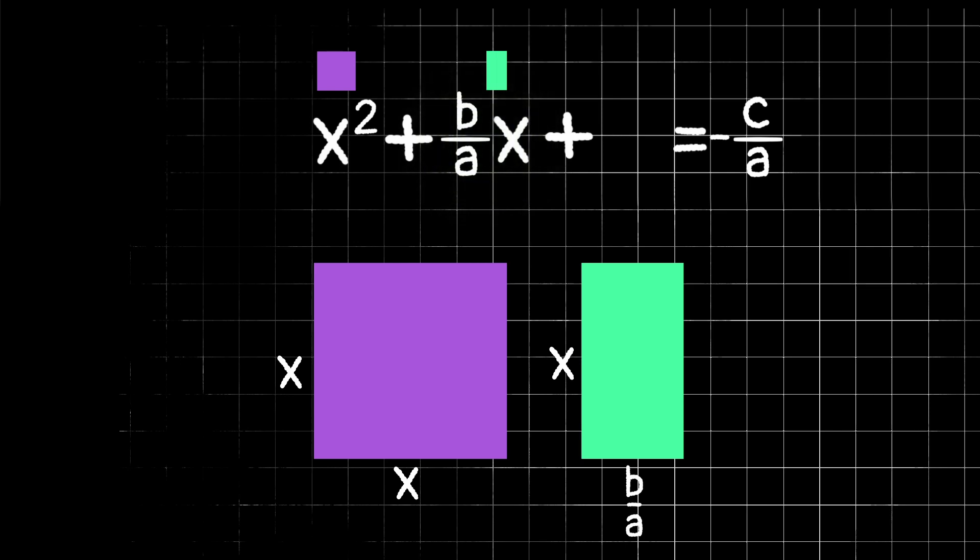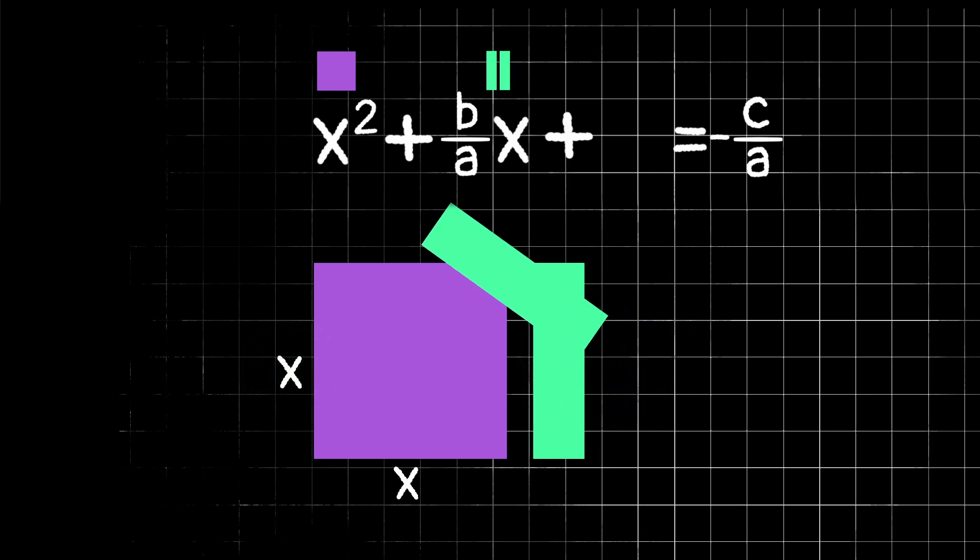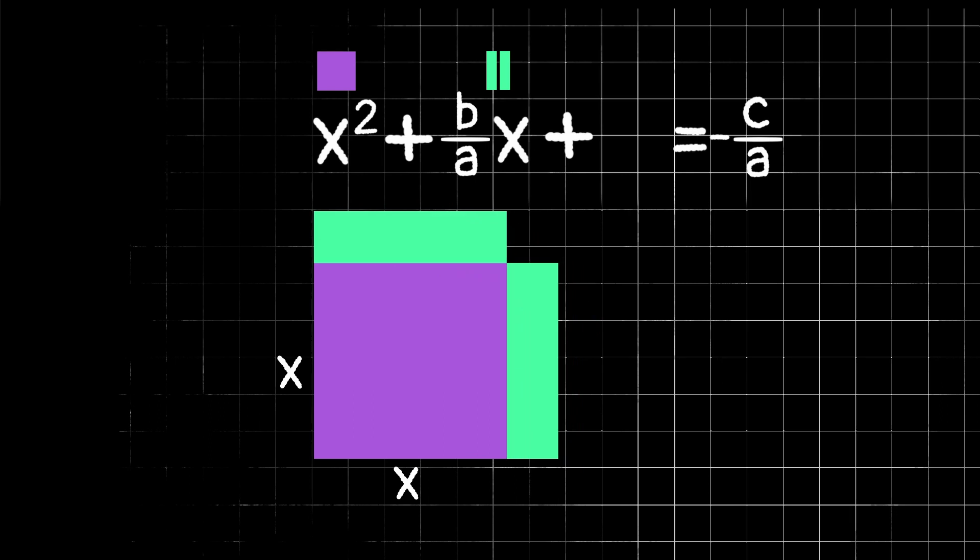But our goal here is still to get that squared term on the left side of our equation. Right now, we just have a square plus a rectangle. We want to turn this into a square. I noticed that both our square and our rectangle have a side length of x. So if I cut my rectangle in half and I add it to the sides of the square, now our square has side length of x plus half of b over a. Or in other words, x plus b over 2a. And that's true for both sides of this square.